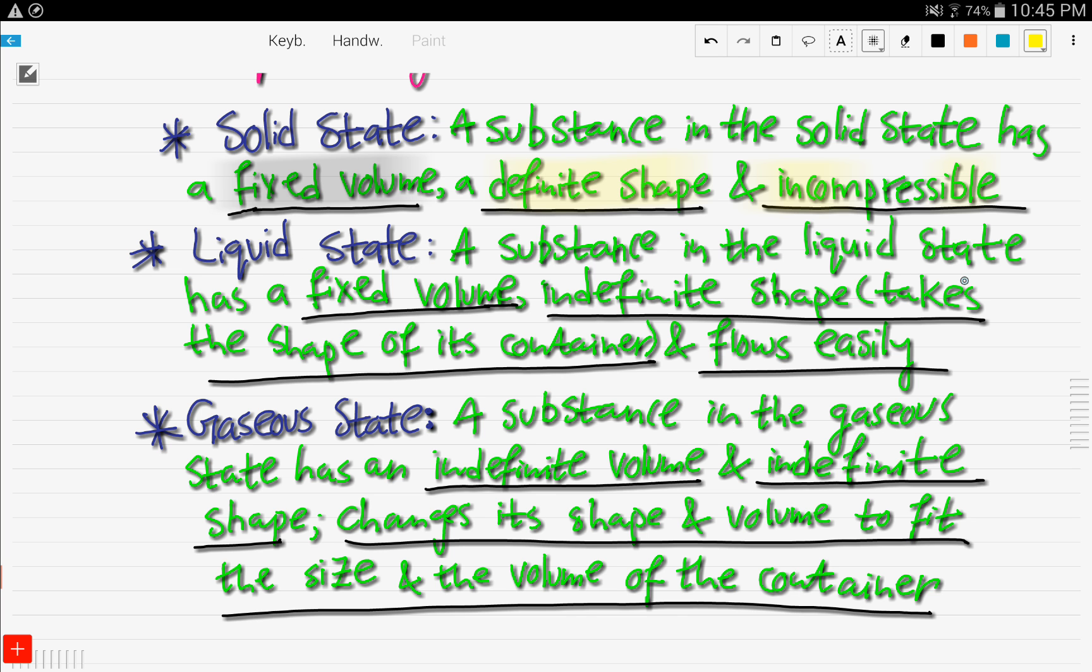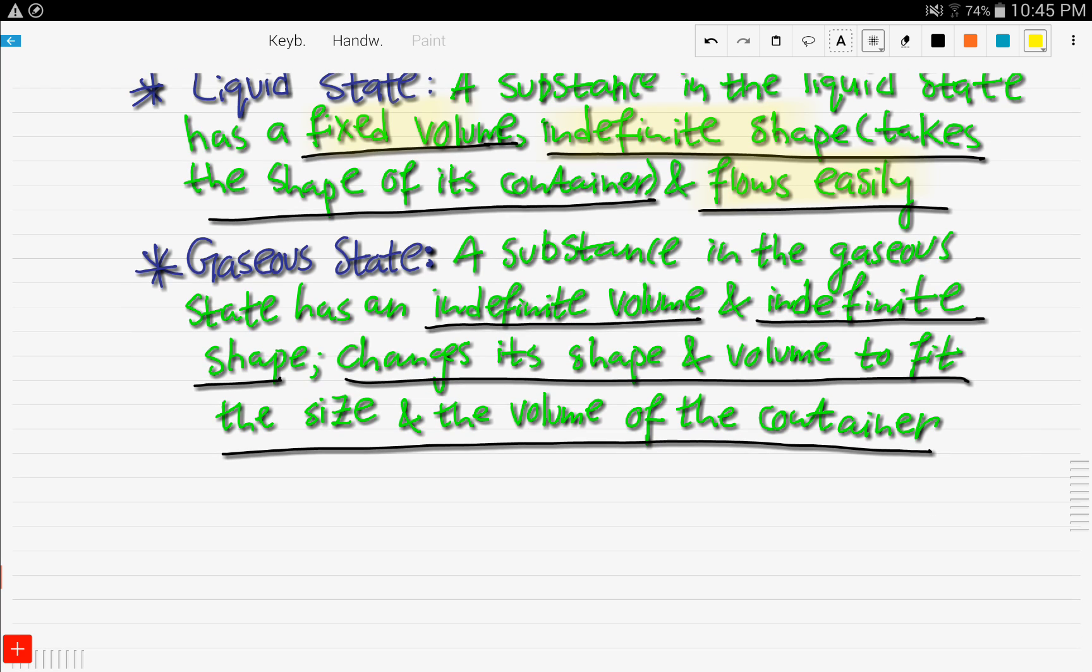As for the liquid state, a substance in the liquid state has a fixed volume, indefinite shape, takes the shape of the container, and it flows easily. So for instance, if you have water in a cup and then you put it in a bowl, it takes the shape of the bowl when it used to be taking the shape of the cup. This is all kind of obvious information, but you just have to know the terminology to use when you're asked for the distinguishing properties like fixed volume, indefinite shape. These kinds of terminology you have to use.